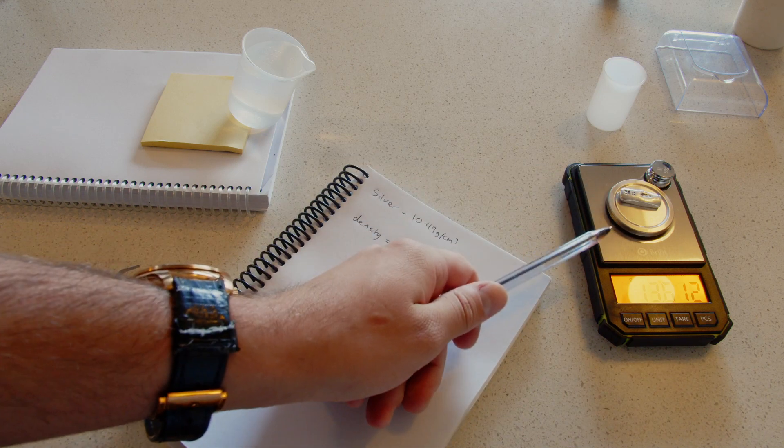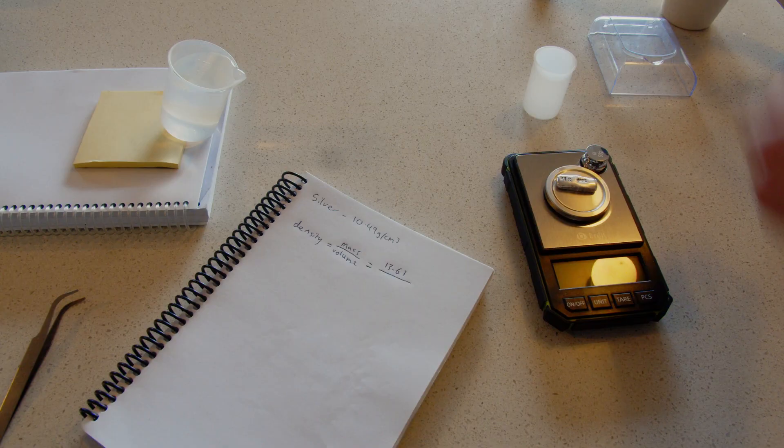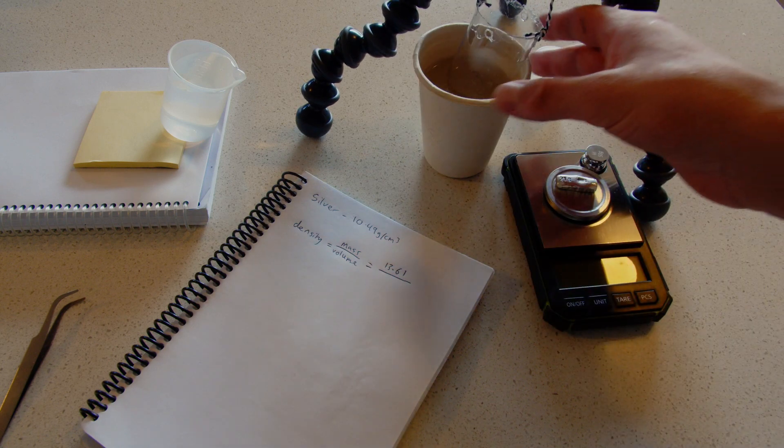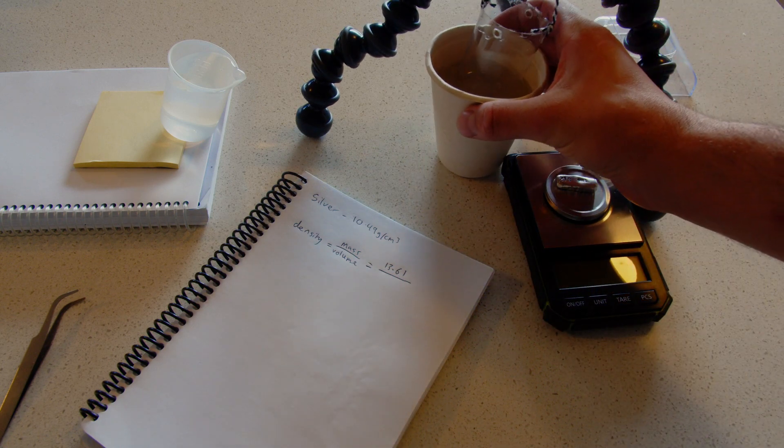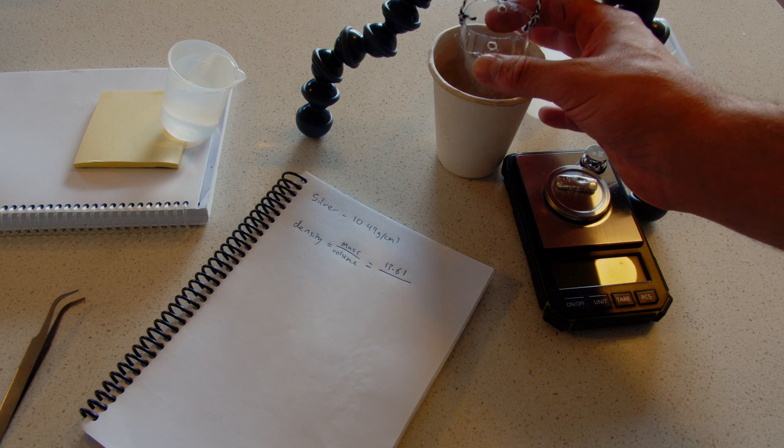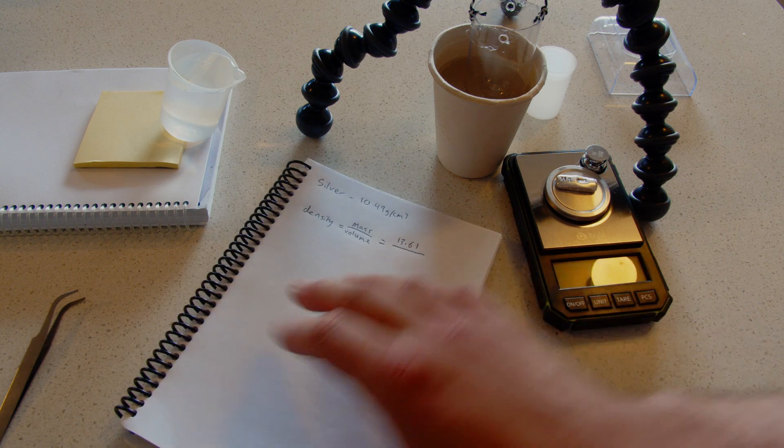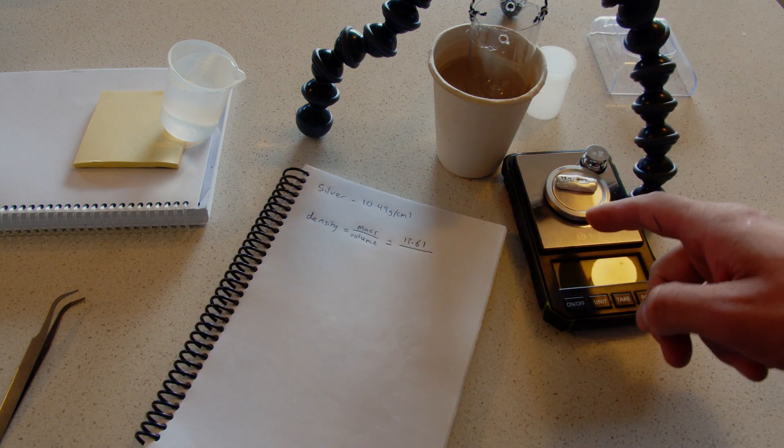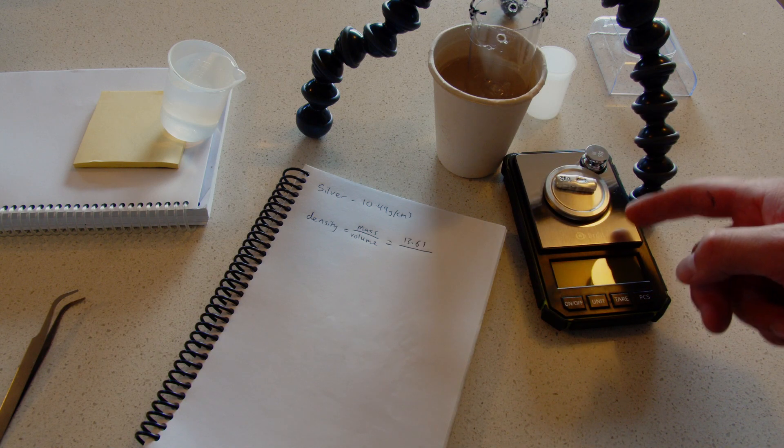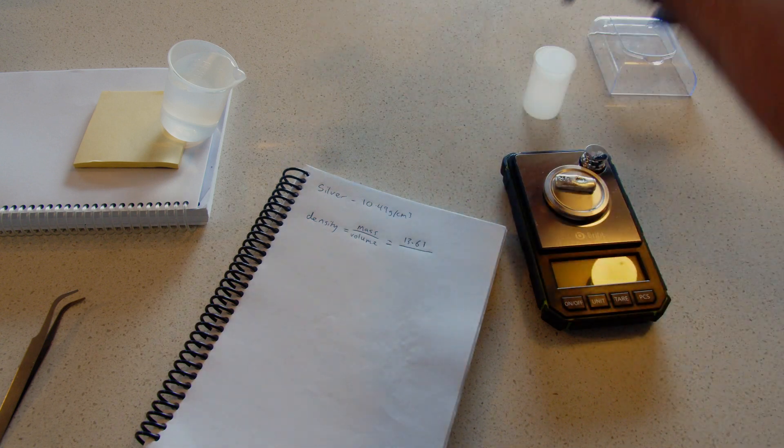The tricky thing is, in the first video I had a setup similar to this - a cup full of water with a floating container to put the silver in and measure its volume. But I can't do that with this scale because it maxes out at 50 grams. The moment I put this cup of water on it, it says it's maxed out and I can't measure anything else.